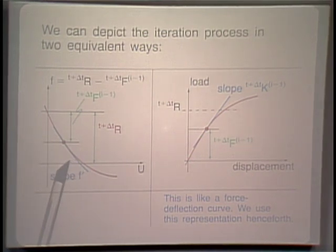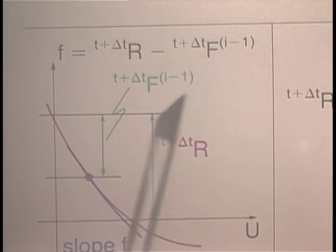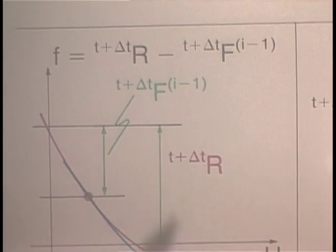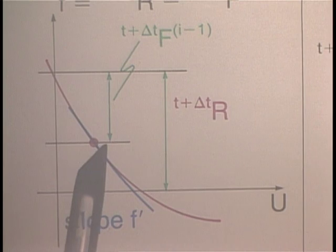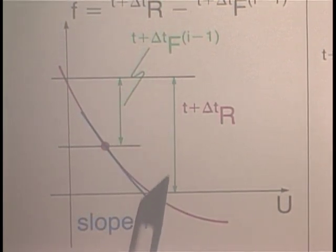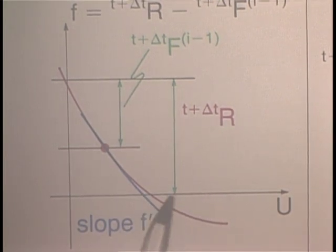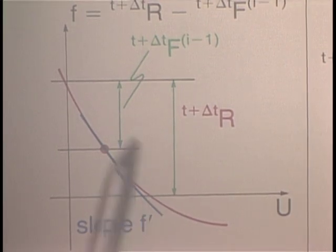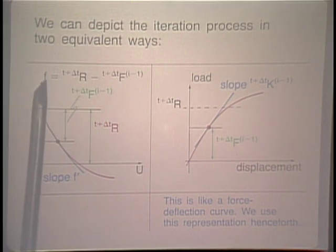We can depict the iteration process in two equivalent ways. The first way is the solution of f equals R minus capital F, where we want to find the root. Notice the red curve represents little f, and at a particular point we have t+delta_t capital F_{i-1}. As we get closer to the root — the point where the red curve crosses the u-axis — capital F gets closer and closer to R. We set up a slope f' at the point corresponding to the i-1 iteration, which brings us to the next starting point.